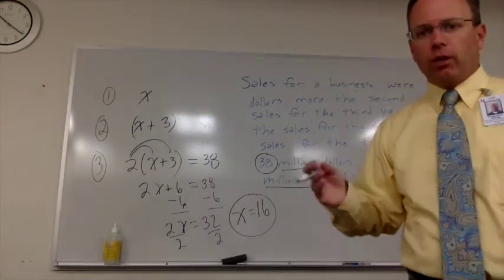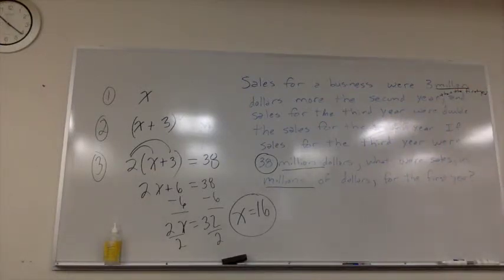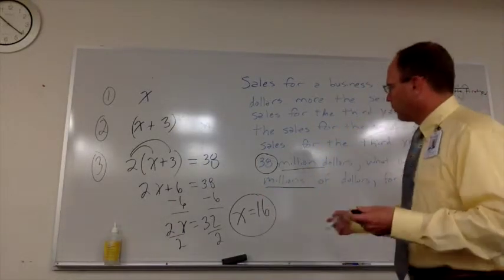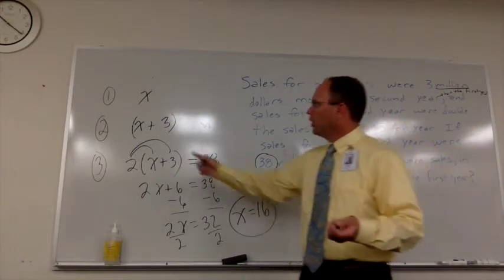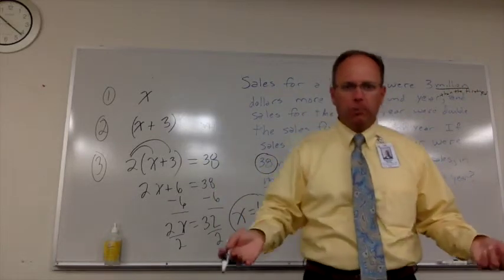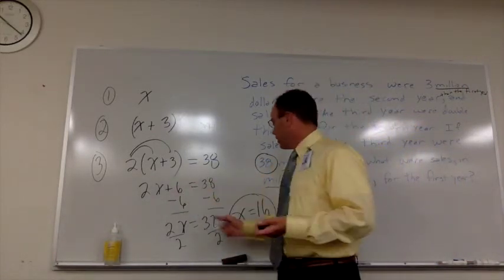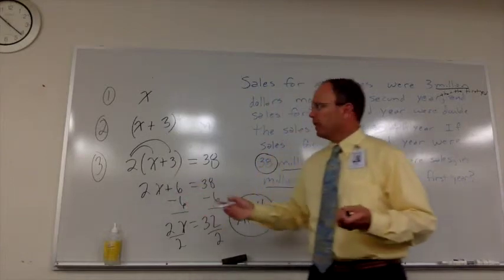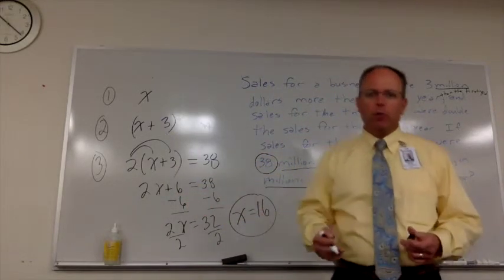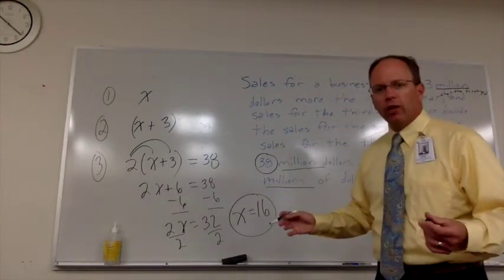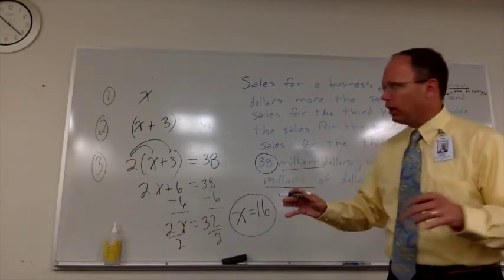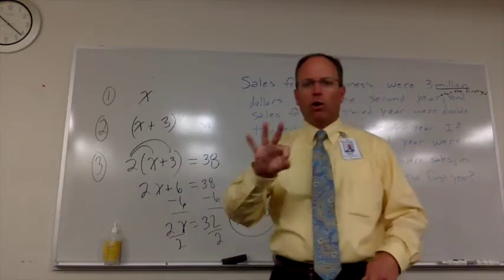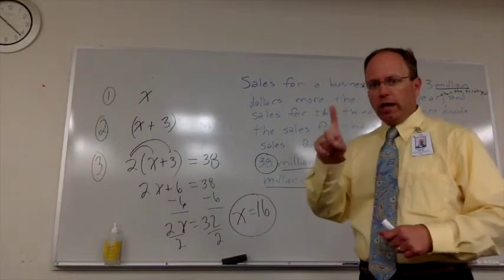X = 16 represents our first year of sales — $16 million. One of our answer choices is 16, so that's the answer. If you wanted to check: the second year is 16 + 3 = 19, so $19 million. The third year is 2 times 19 = 38 — and that confirms it. If the question had asked for total sales, you would add 16, 19, and 38 together. But this question only asks for the first year, which is $16 million.